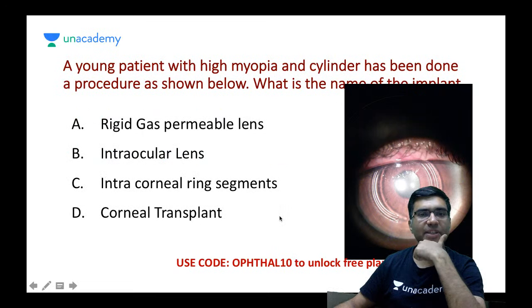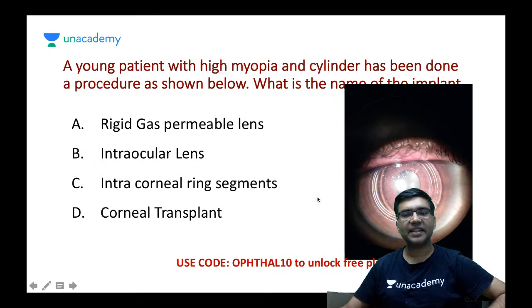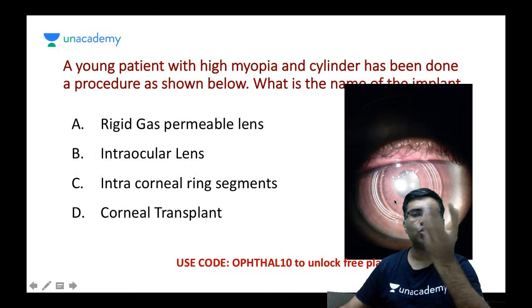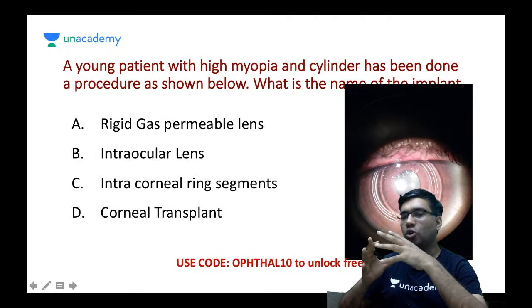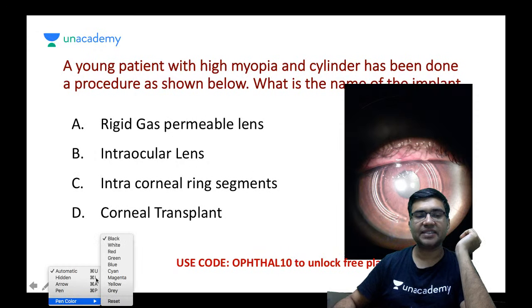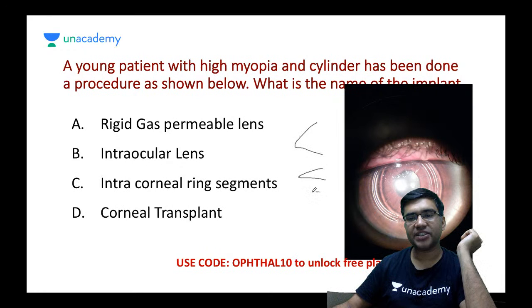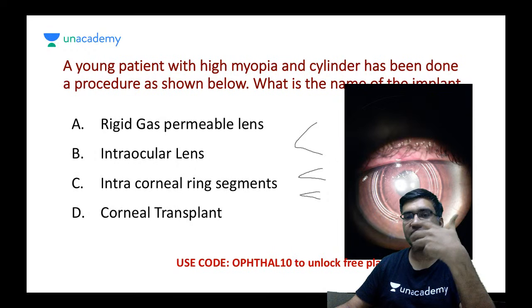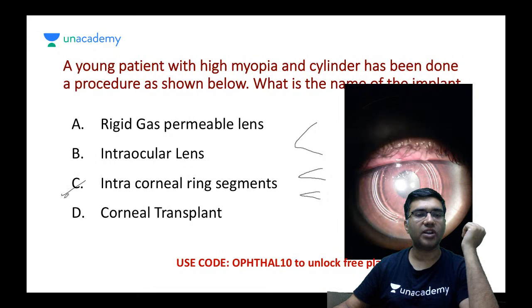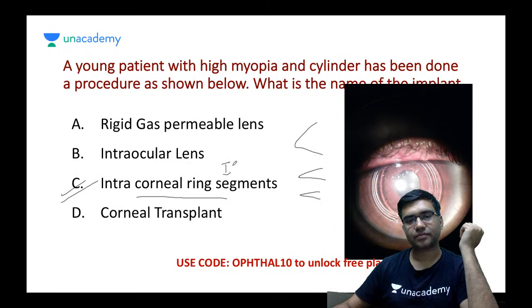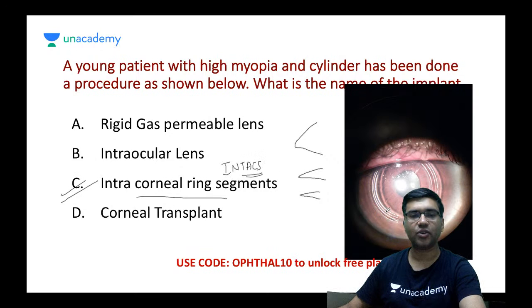A young patient with myopia and astigmatism has had a procedure where a ring is placed inside the corneal stroma. This ring makes the cornea more rigid to prevent change in shape. In keratoconus, there is progressive corneal thinning and shape change — to avoid this we can use these rings, called intracorneal ring segments (INTACS). INTACS are used in patients with keratoconus.